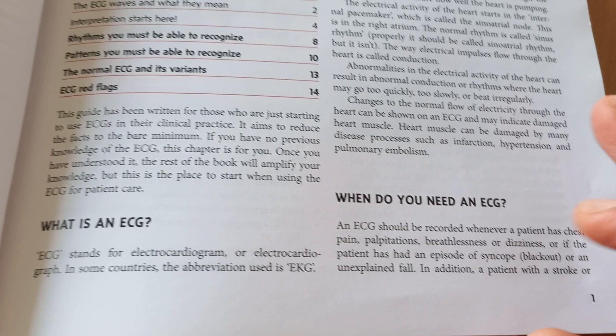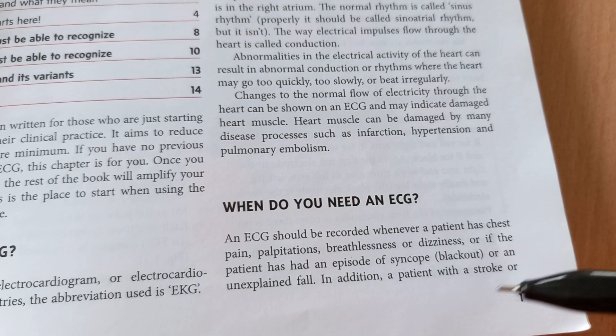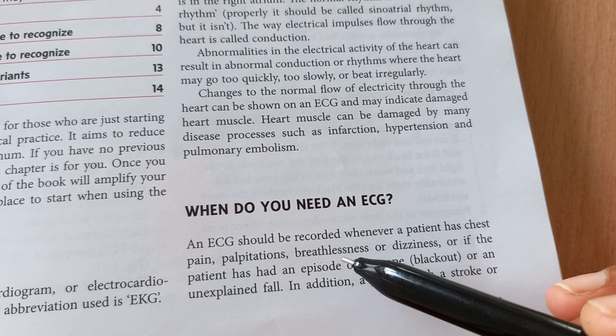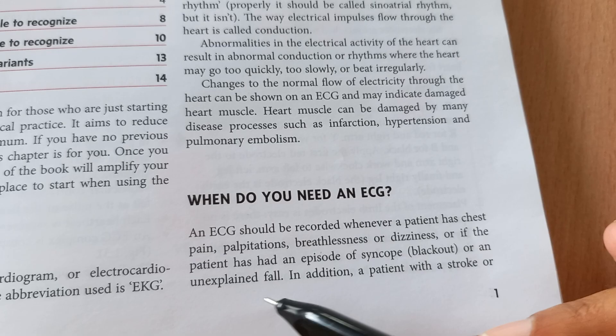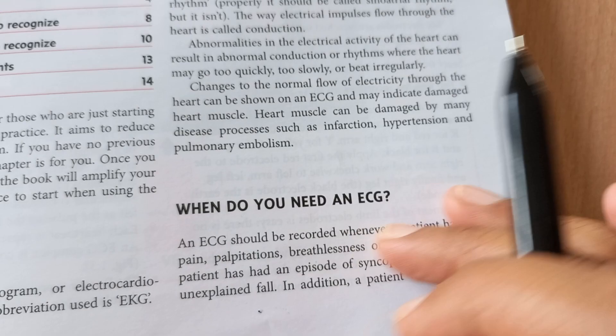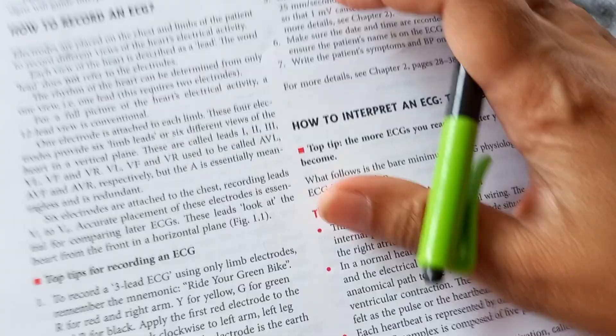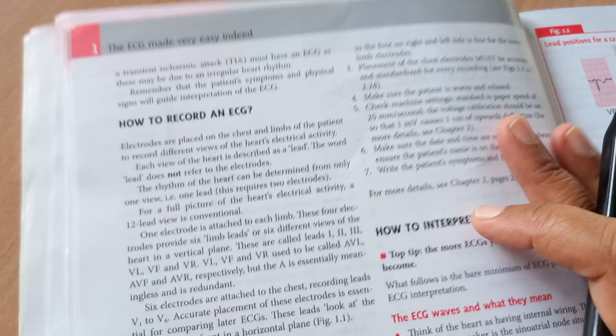So when do you need an ECG to be done? Whenever the patient is complaining of some uneasiness with sweating, when you suspect some kind of a problem with the heart: chest pain, palpitation, breathlessness, dizziness, or if the patient has an episode of syncope. Syncope is anything because of the heart; the hypotension could cause it. So unexplained fall—basically, we don't exactly go with chest pain, palpitation, breathlessness, dizziness only. Anything with an uneasy feeling which is pointing to a probable impending heart condition, they do.